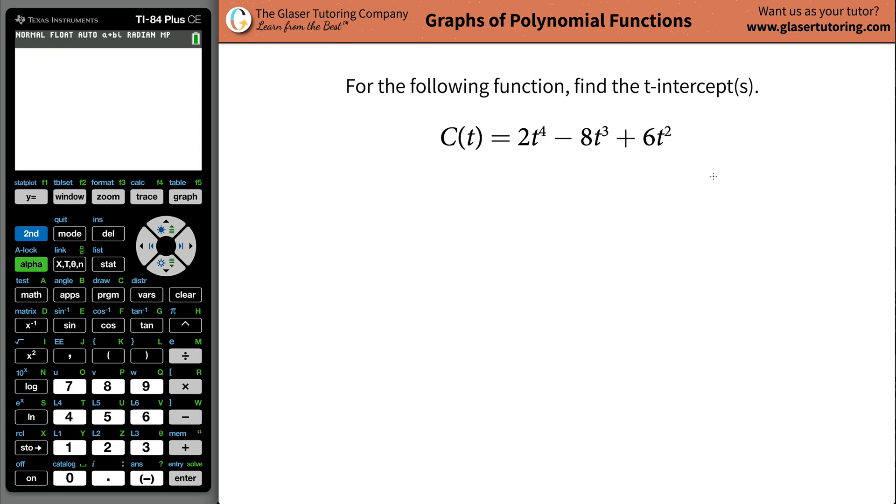In order to find the t or x-intercepts, the first thing we have to realize is what are t or x-intercepts? Let's pretend you have a function like this. The t-intercepts, remember t is always written on the horizontal axis and the function's value, or in this case C(t), is on the vertical axis.